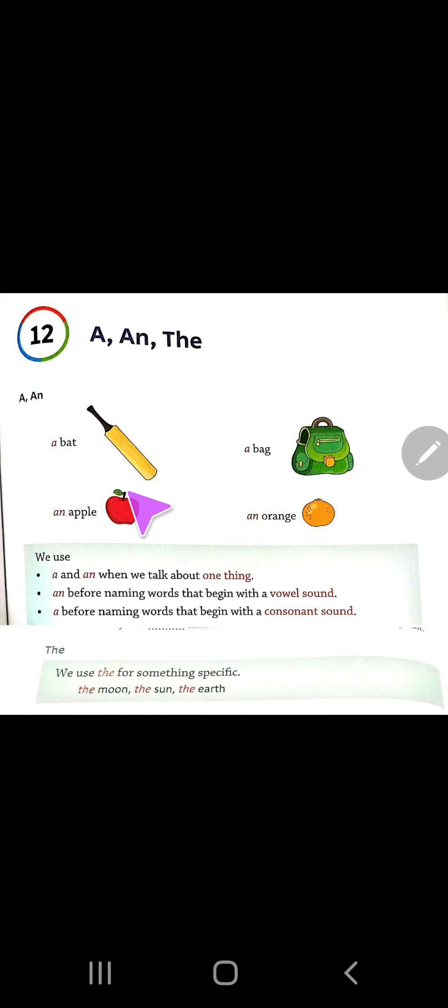So first let's see A and An. Let's see what is the picture of this. This is bat. So, a bat. A bag. An apple. An orange.